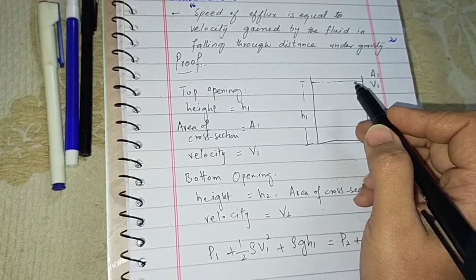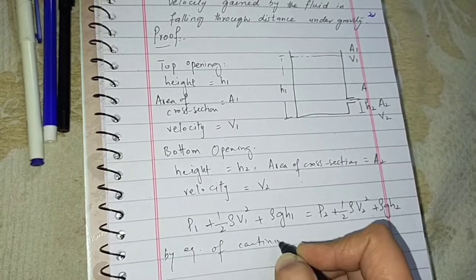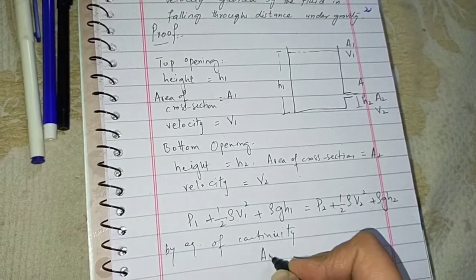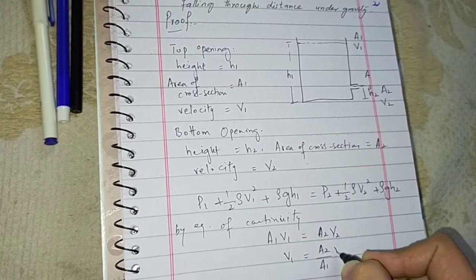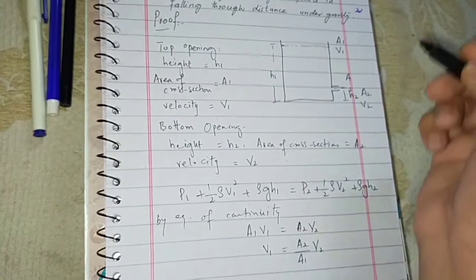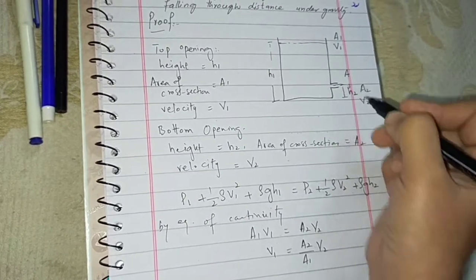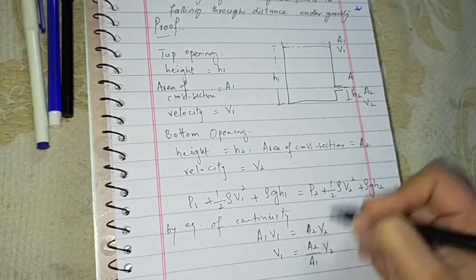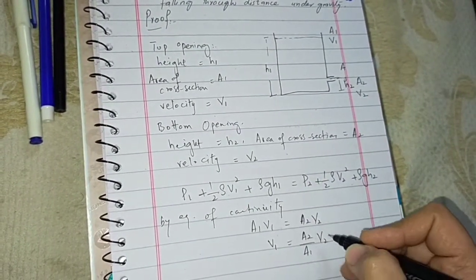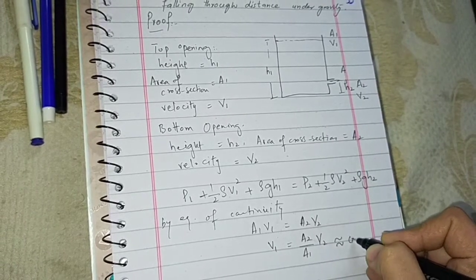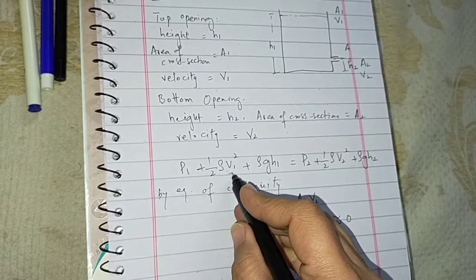We apply the equation of continuity. The result is A1 V1 equals A2 V2, so V1 equals (A2 over A1) times V2. Now, A2 is very small and A1, the area of cross section at the top of the tank, is very large. So V1 is very close to zero, and we can take V1 equal to zero.